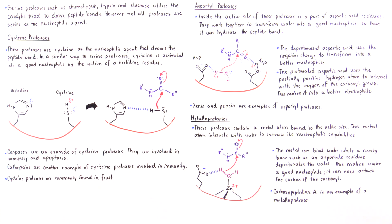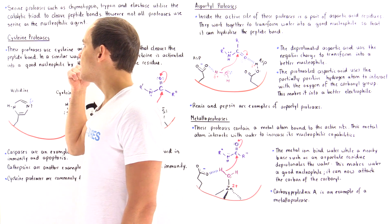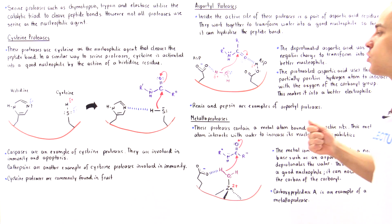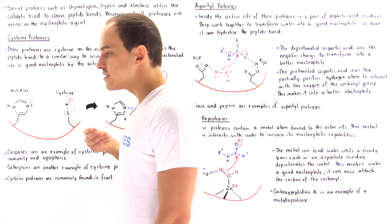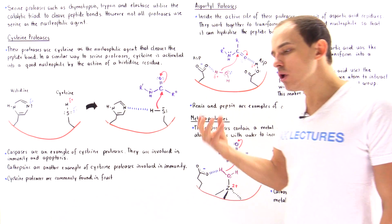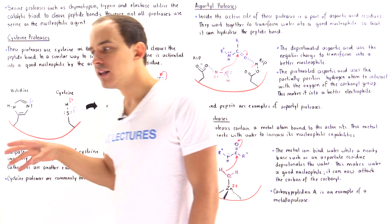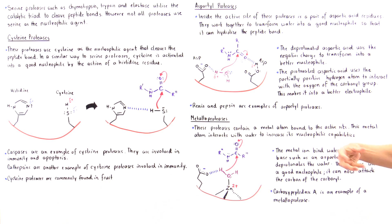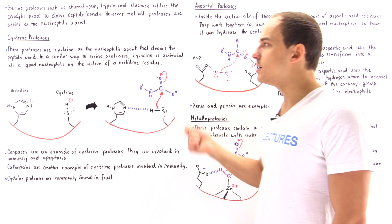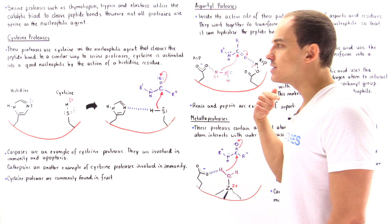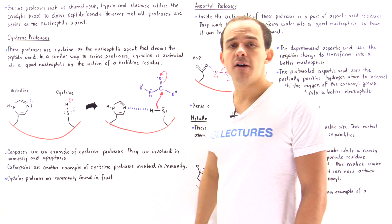Even though we have many different types of proteases — serine proteases, cysteine proteases, aspartyl proteases, metalloproteases, and so forth — they all function in a very similar way. What they ultimately do is transform a bad nucleophile into a good nucleophile, and transform a bad electrophile into a better electrophile, so that a strong nucleophile attacks a very good electrophile. That is exactly what increases the rate of hydrolysis of the peptide bond.